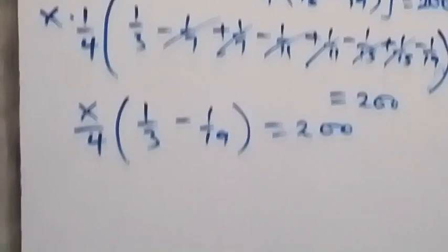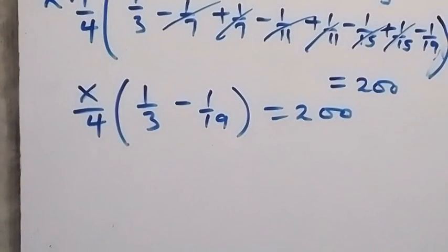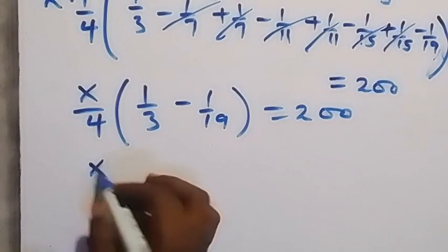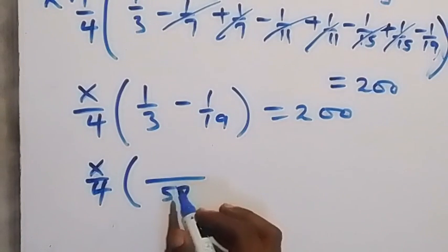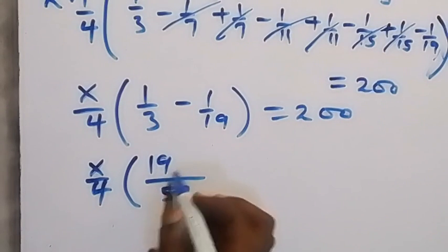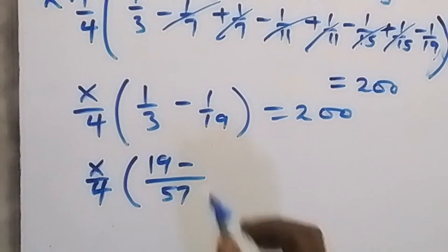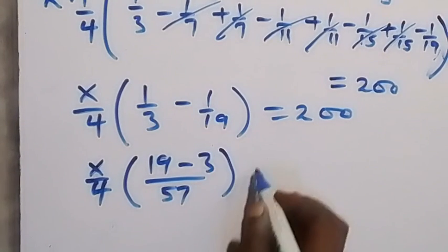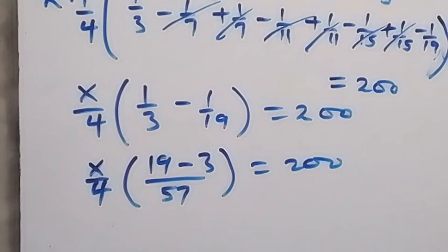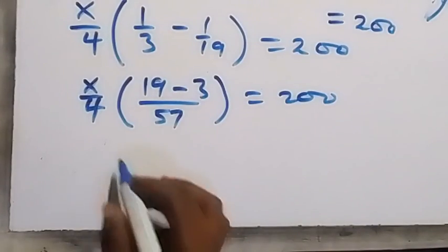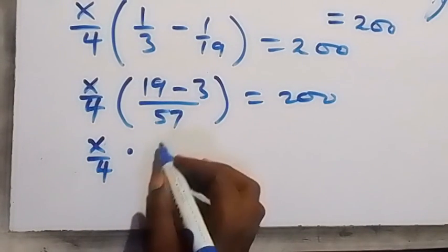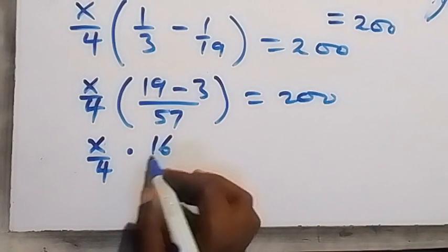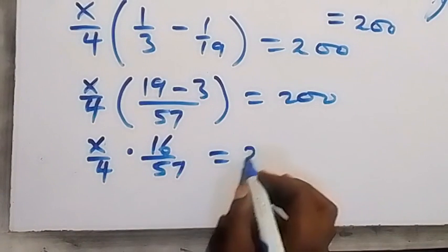By the time we simplify the bracket, the LCM inside the bracket is 57. So we have x over 4 into bracket, where 3 goes into 57 giving 19 times 1 equals 19, minus 19 goes into 57 giving 3 times 1 equals 3. That gives us 16 over 57. So we have x over 4 multiplied by 16 over 57 equals to 200.